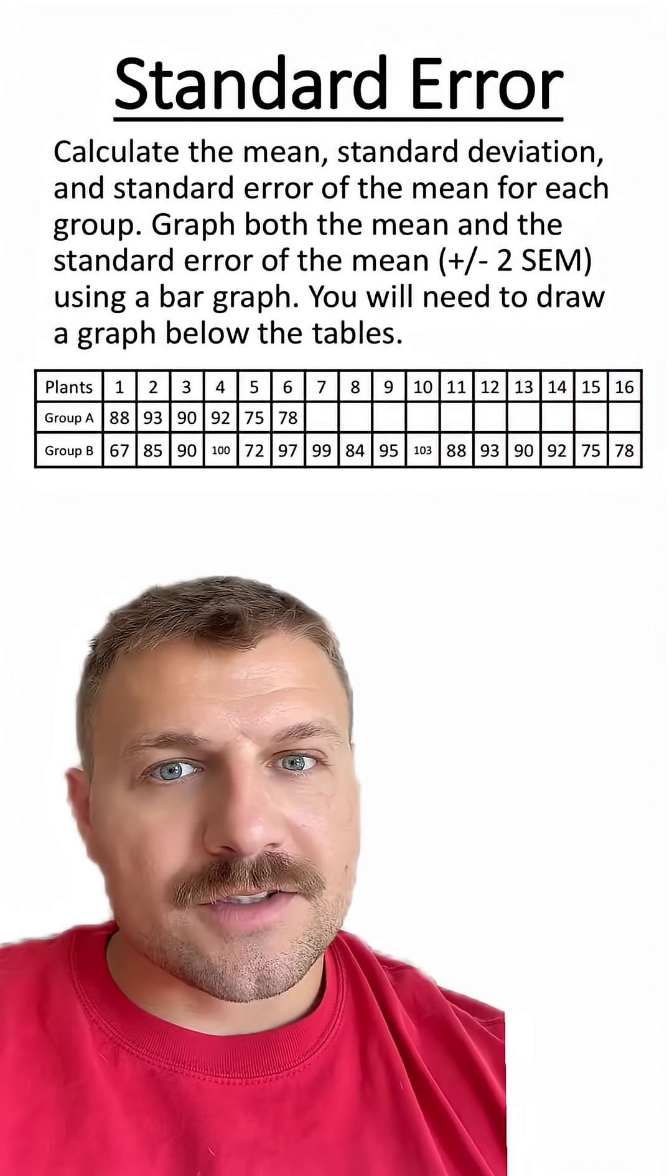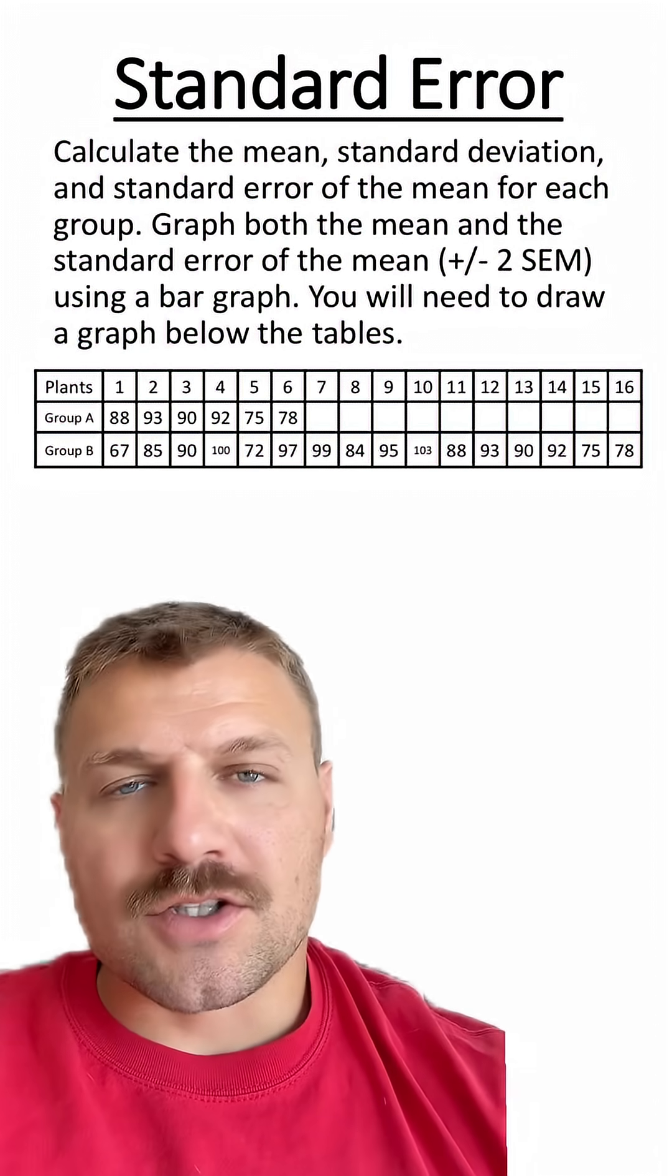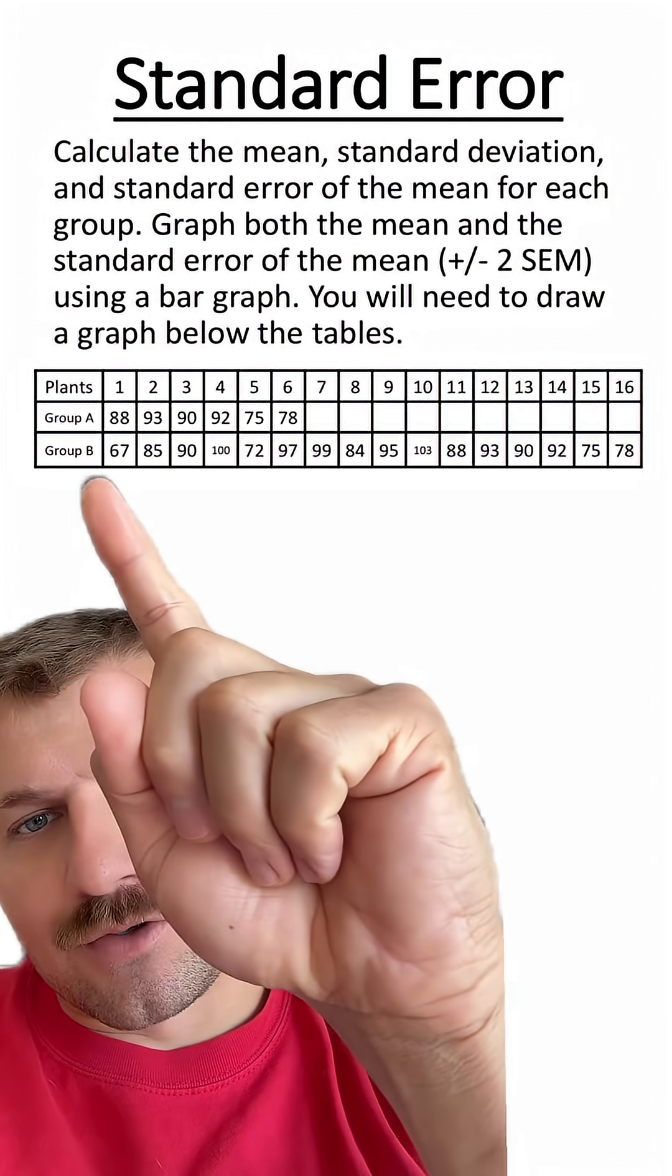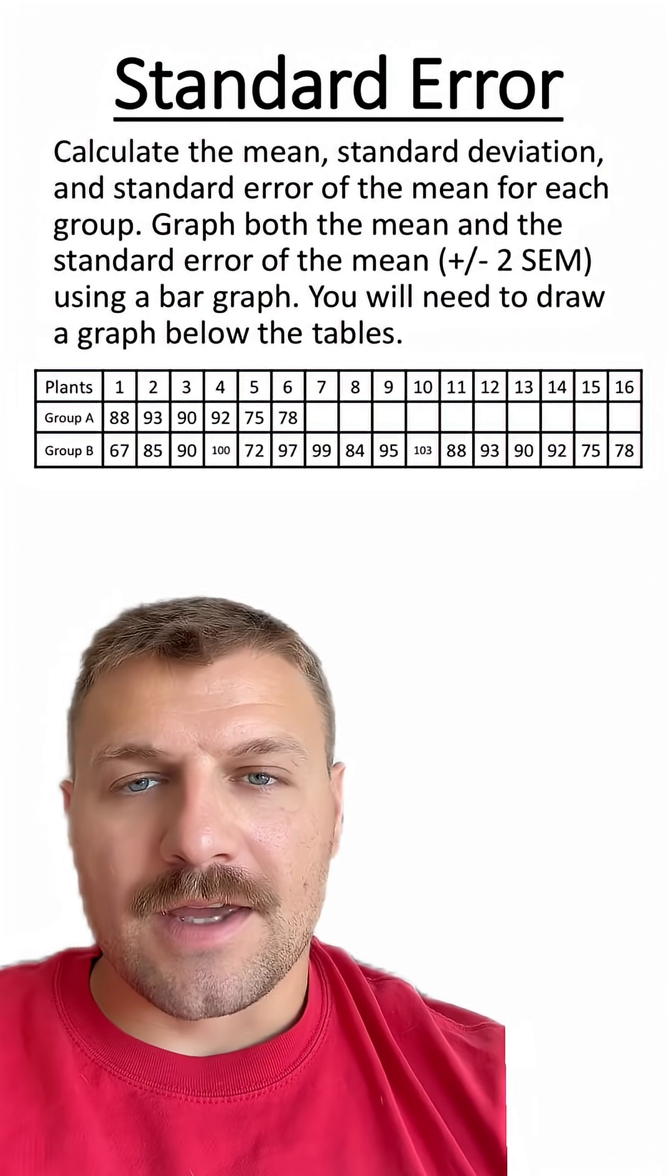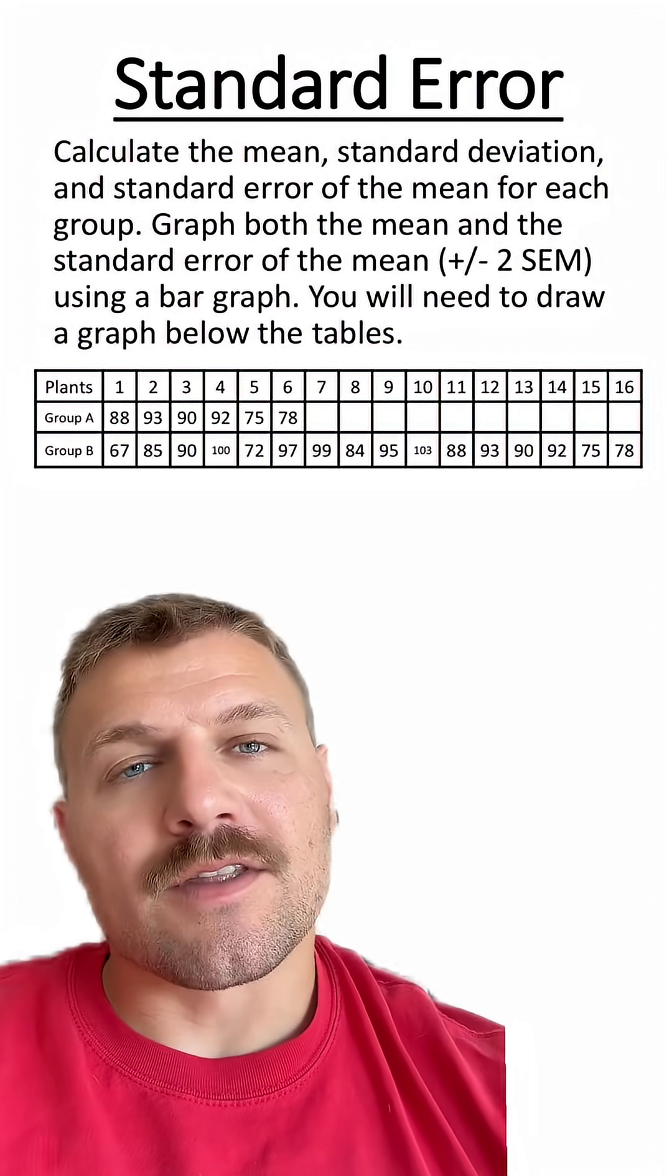Then I'll show you what that looks like on a graph. Here are two groups of data - Group A and Group B. You can see in Group A there are only six data points, but in Group B there are 16.